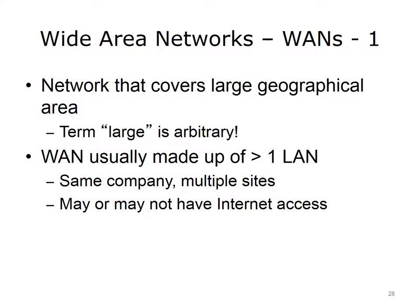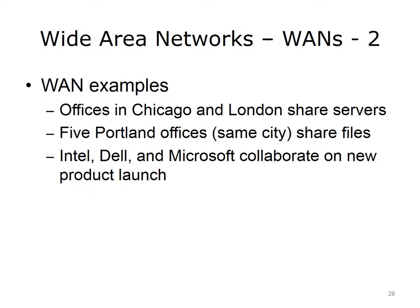A network encompassing a large geographical area is called a Wide Area Network, or WAN. A WAN generally consists of one or more LANs. A WAN may exist within one company across multiple sites and may or may not have internet access. Some examples of WANs include a company with offices in Chicago and London needing to share servers, printers, and other devices; five offices in the city of Portland in different locations within the city; and Intel, Dell, and Microsoft joining their networks together in a limited manner to collaborate on the creation of a new product.